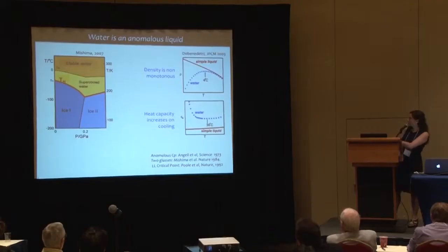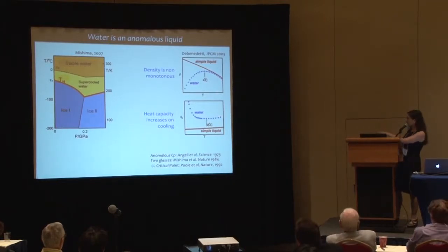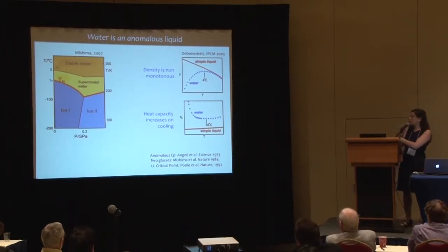Something even more astonishing — shown by Angell in 1973 and also work in Russia at the same time — is that the heat capacity of water increases significantly on cooling and actually goes up very fast in the supercooled region. It can be fit to a power law, meaning it would diverge — the heat capacity would go to infinity — at about minus 40 to minus 42 centigrade. Don't worry, it will not actually happen.